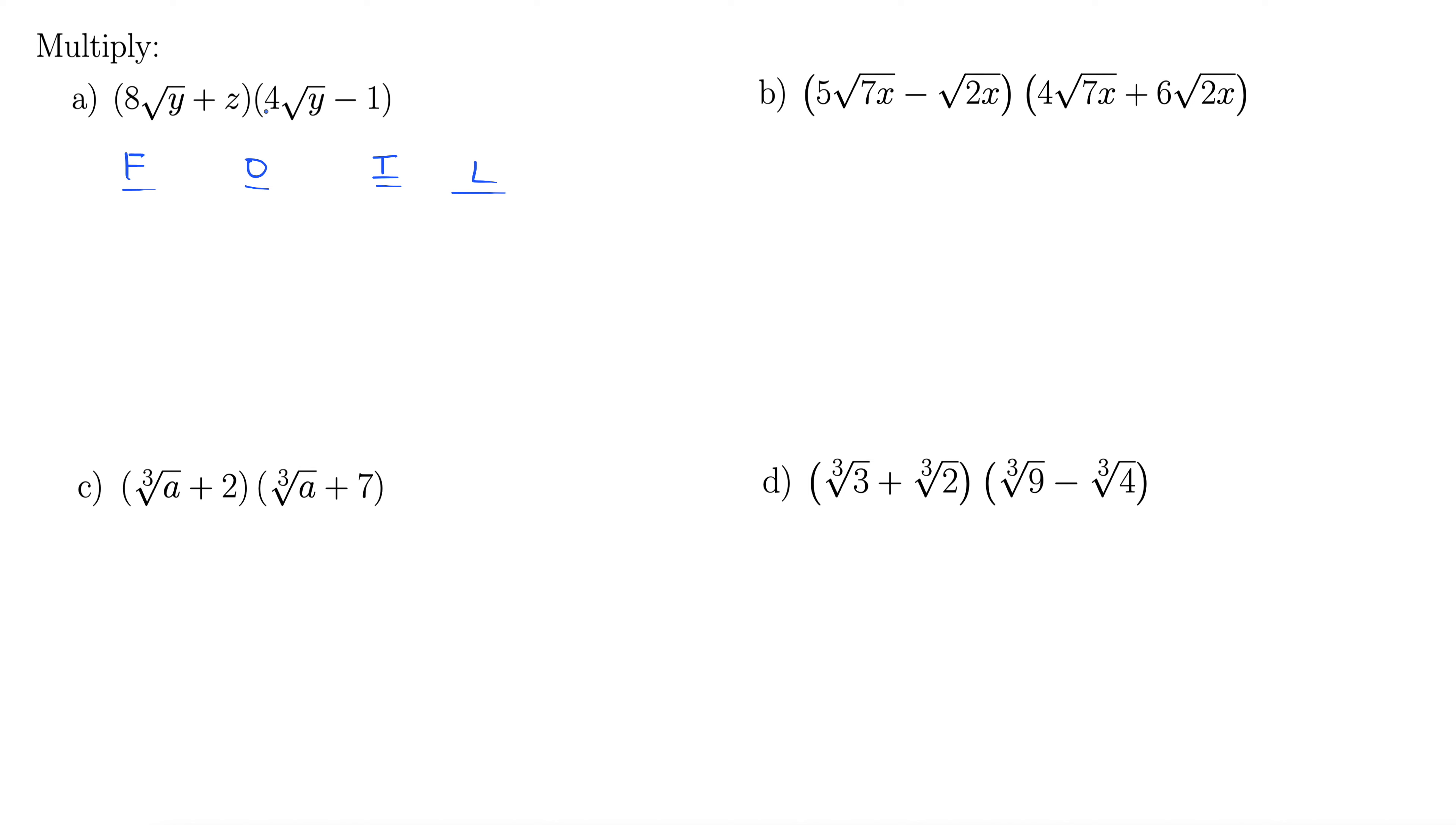So first, let's see, we have 8 times 4 is 32, and rad y times rad y is rad y squared, which is indeed y. And we're assuming all variables are positive, so we don't have to put an absolute value here or anything like that. So 32y for first.